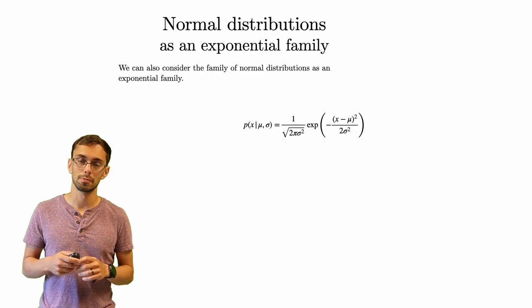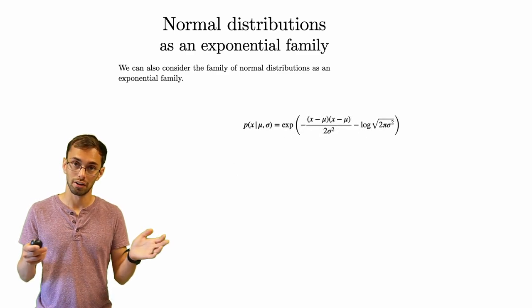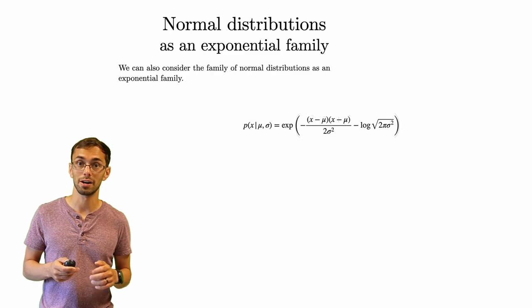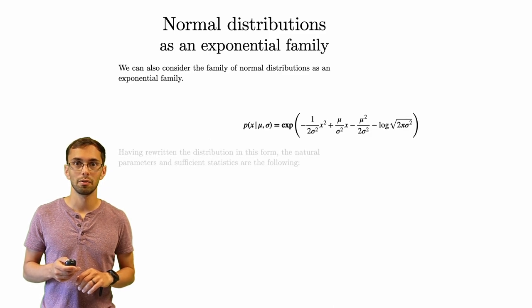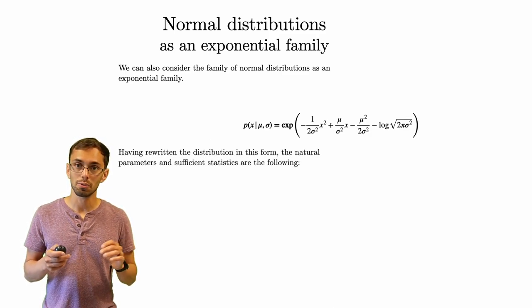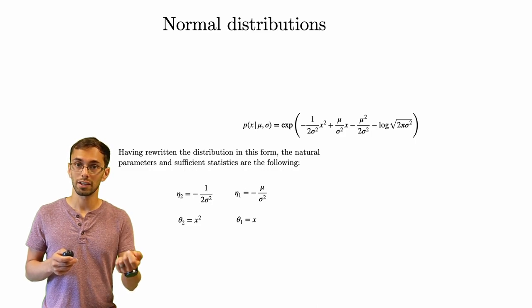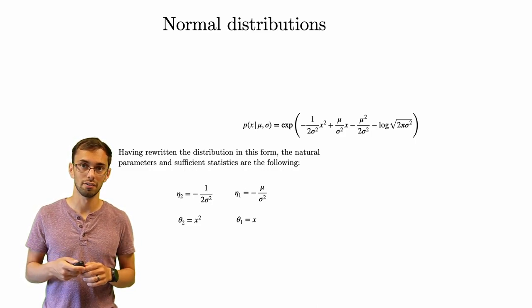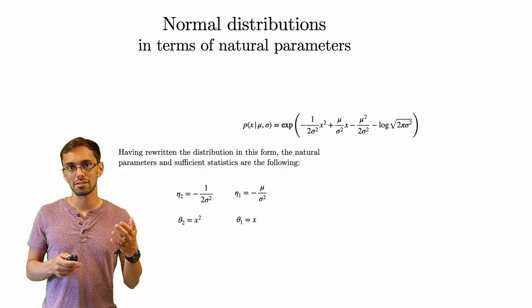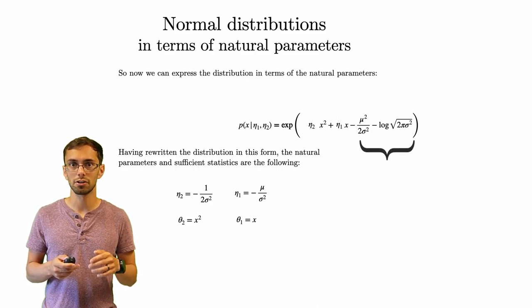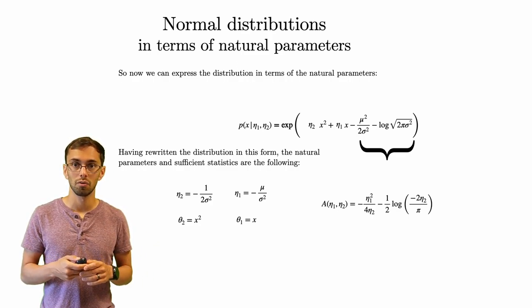Let's consider the family of normal distributions as an exponential family. To do this, we need to rewrite the PDF of the normal family — it's just algebra. When we do that, the sufficient statistics eta_1 and eta_2 are given explicitly, as are theta_1 and theta_2, which are functions of points in the sample space. The final term is our log partition function, and when we rewrite it in terms of eta_1 and eta_2, we get a specific expression for A(eta).